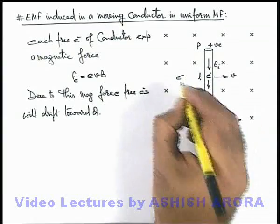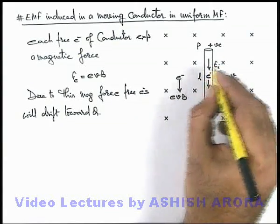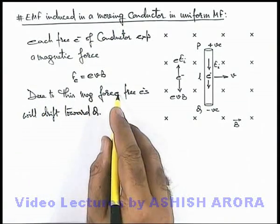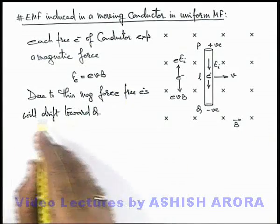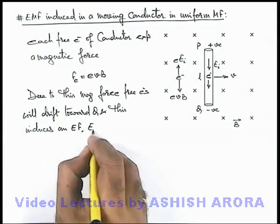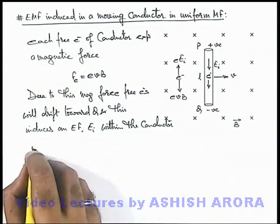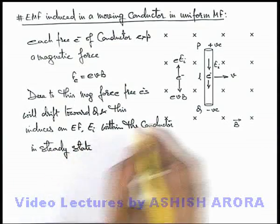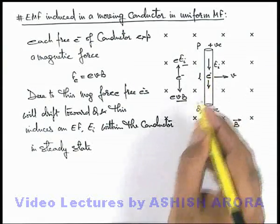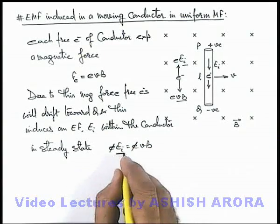Due to this induced electric field, the electron in the downward direction was experiencing a magnetic force evB, and due to the drift of electrons, an induced electric field is developed which applies an upward electric force eE_i on the electron. So due to the magnetic force, free electrons drift toward Q, and this induces an electric field E_i within the conductor. In steady state, this induced electric field continuously increases due to the drift of electrons until the electric force balances the magnetic force on the electron, so no more drifting takes place. In steady state, eE_i equals evB.